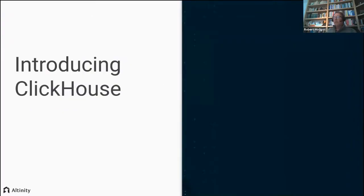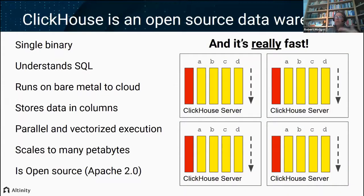Let me introduce ClickHouse. If this is your first time hearing about it, this part is for you. ClickHouse is an open source data warehouse. Data warehouses are designed to answer open-ended questions about business data. By open-ended, I mean you will ask a question like how many sales do I have by region, by product. Any combination of properties you might have about sales, you can combine them in a query and ask to see aggregates — numbers of sales, amounts, average sale, the place where you had the least sales, the products with the most sales.